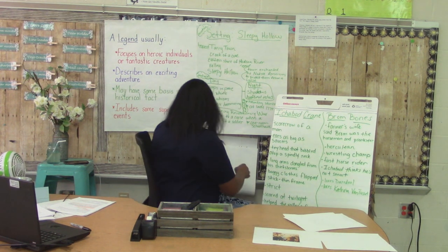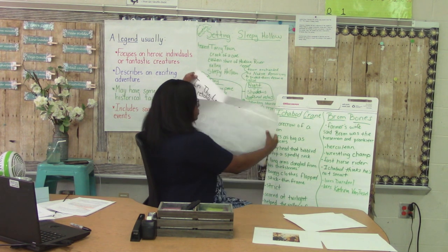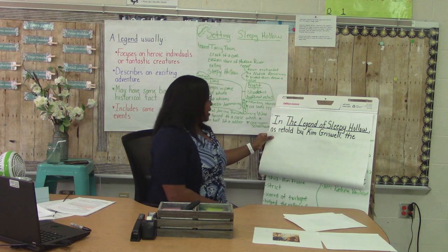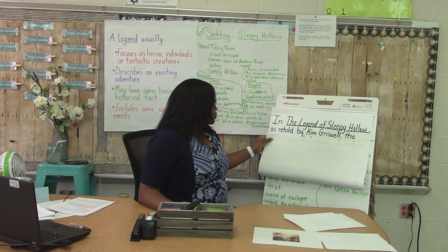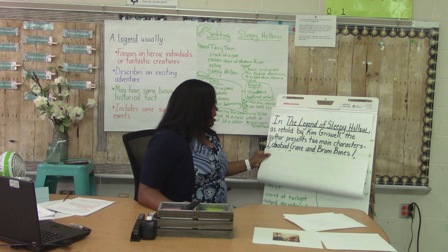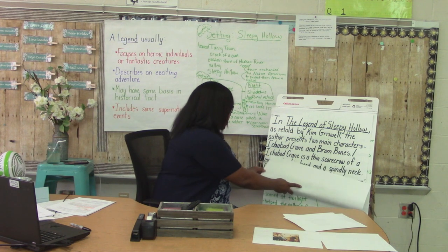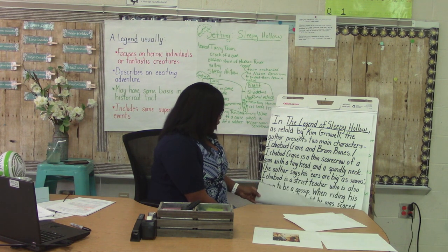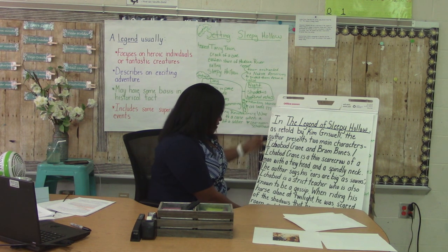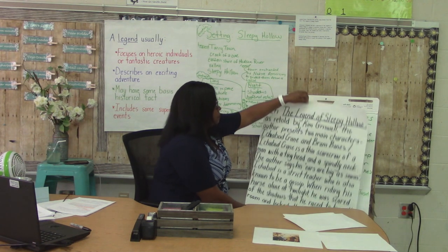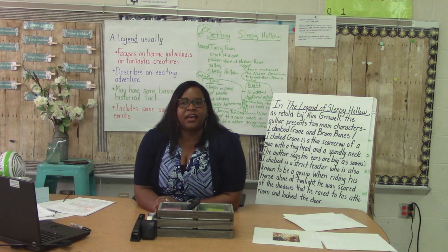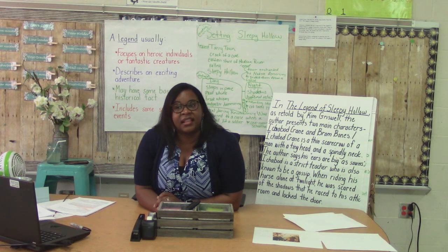Now let's see what mine looks like. The Legend of Sleepy Hollow as retold by Kim Griswold — the author presents two main characters, Ichabod Crane and Brum Bones. Ichabod Crane is a thin scarecrow of a man with a tiny head and a spindly neck. The author says his ears are as big as saucers. Ichabod is a strict teacher who is also known to be a gossip. When riding his horse alone at twilight, he was scared of the shadows and ran to his attic room and locked the door. Think about how you might put together sentences about how Ichabod acts or what he does — say it aloud to yourself as you write yours.